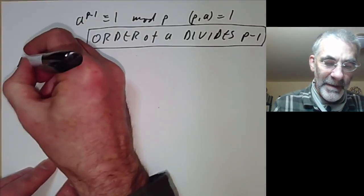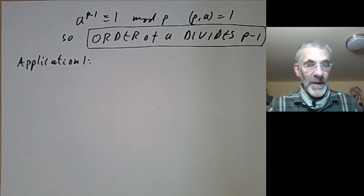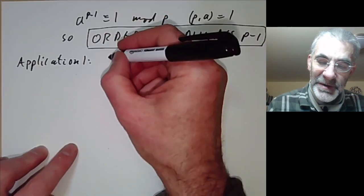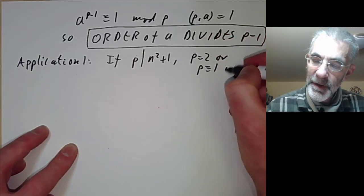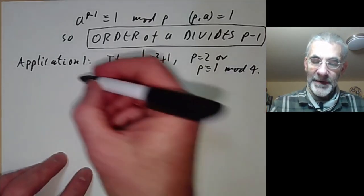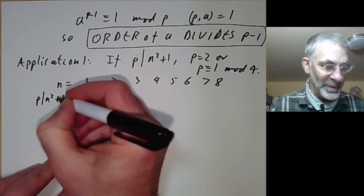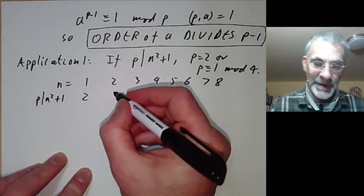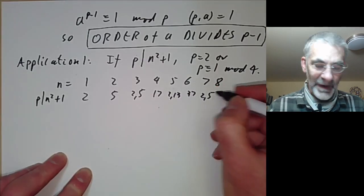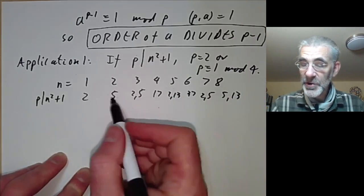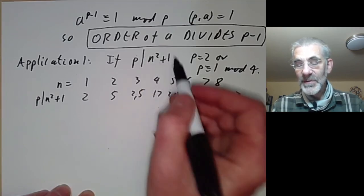Here's the first application. Earlier we proved there are infinitely many primes of the form 1+4n by using the fact: if p divides n squared plus 1, then p equals 2 or p is congruent to 1 modulo 4. You can check this quickly by looking at n = 1 through 8 and the primes dividing n²+1 — they are all either 2 or congruent to 1 mod 4. In fact every prime of the form 1 mod 4 divides n²+1 for some n.